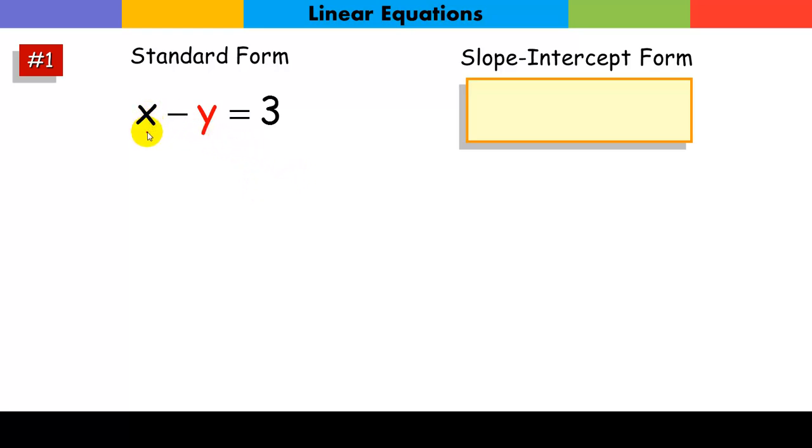So the first thing I'm going to do is I'm going to subtract this x off of both sides. But remember, I'm going to move this guy over, because what I want to do is have the variable term in front of the constant.